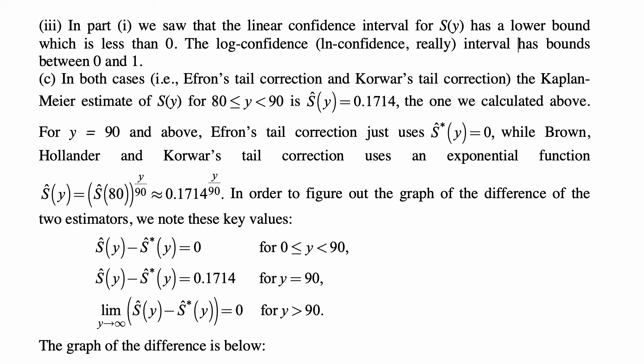For y equal to 90 and above, Efron's tail correction just uses S-hat-star(y) equal to 0, while Brown, Hollander, and Korwar's tail correction uses an exponential function S-hat(y) equal to S-hat(80) to the power (y/90), which is approximately 0.1714 to the power (y/90). In order to figure out the graph of the difference of the two estimators, we note these key values: